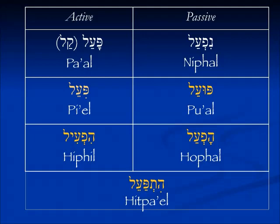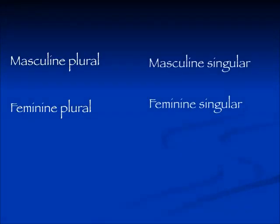We have already covered the pa'al, the pi'el, and the hif'il. Today we're going on to the pu'al and the ho'fal. These two new binyanim will also be ones where the participle starts with mem. Remember, the participle has four forms: a masculine singular, a feminine singular, a masculine plural, and a feminine plural.